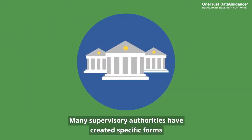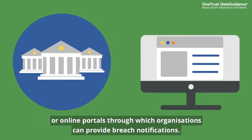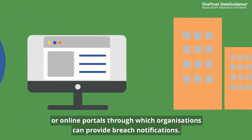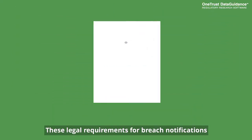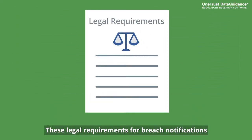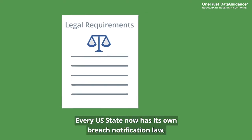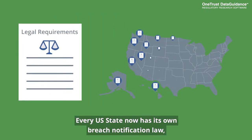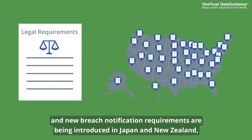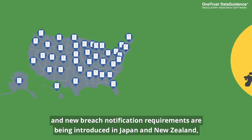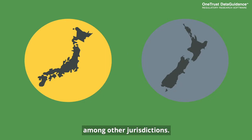Many supervisory authorities have created specific forms or online portals through which organizations can provide breach notifications. These legal requirements for breach notifications are becoming increasingly common around the world. Every U.S. state now has its own breach notification law, and new breach notification requirements are being introduced in Japan and New Zealand, among other jurisdictions.